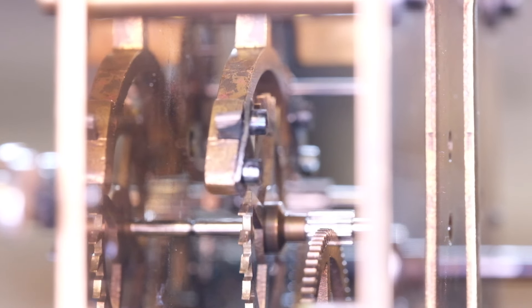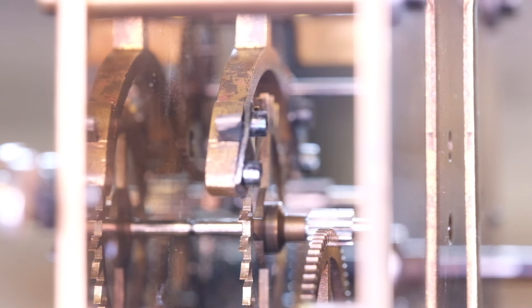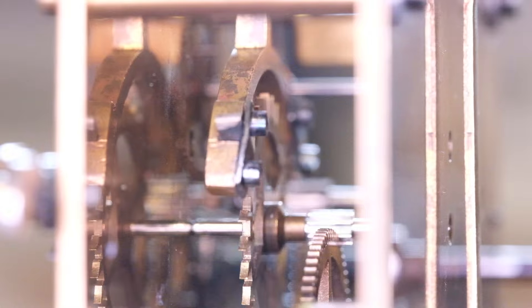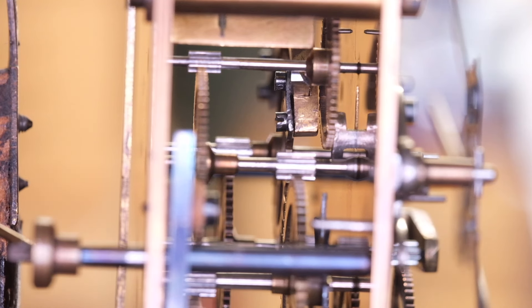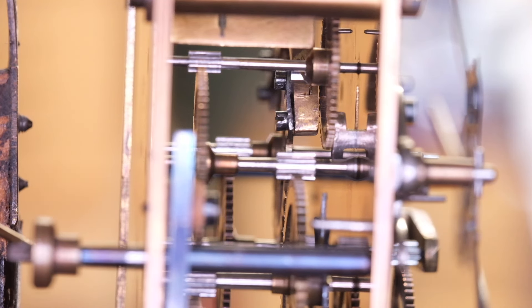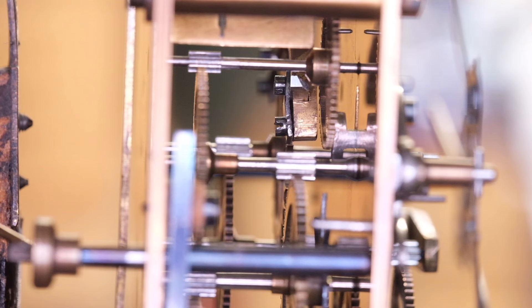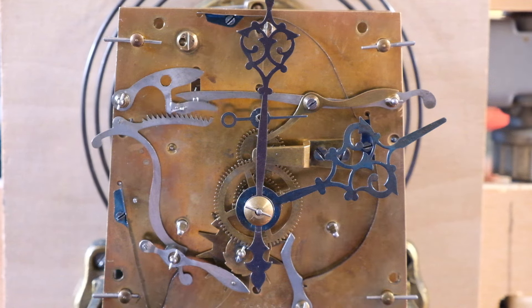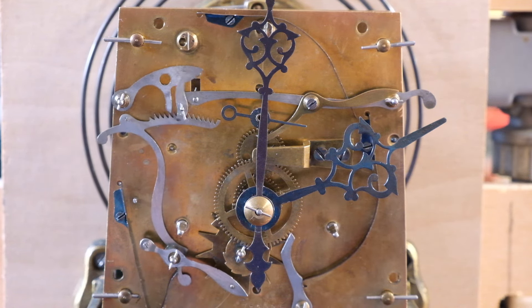When the escapement is running, some is enough is the answer here. There's no advantage to having more. And once I've done that I can put the pallets back in the clock frame with the clock cleaned and assembled. Obviously if you don't have a depthing tool you just have to carry out this operation in the frame itself. And there we are, clock is ticking away nicely.